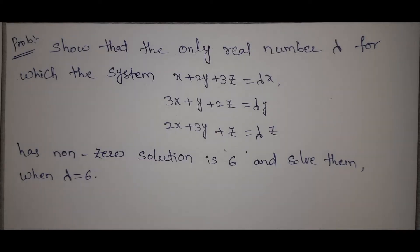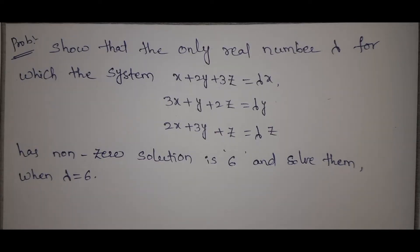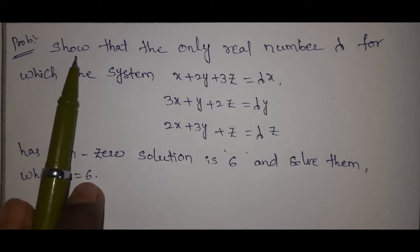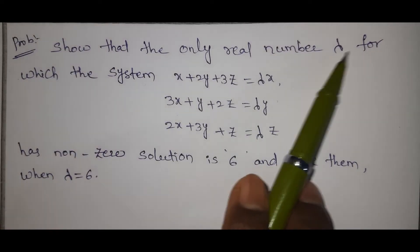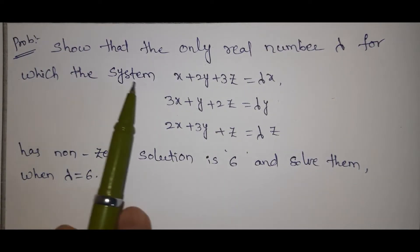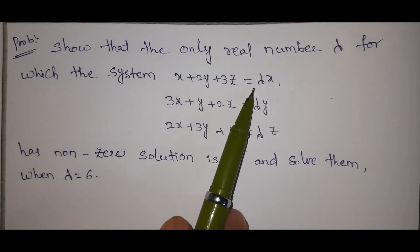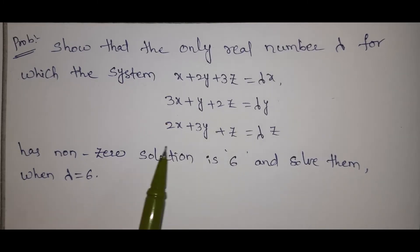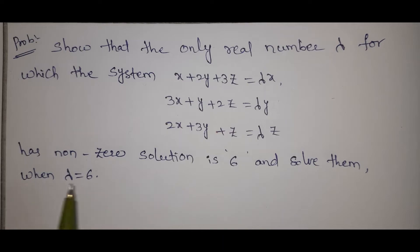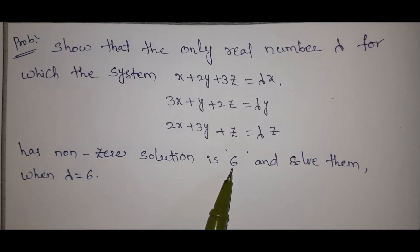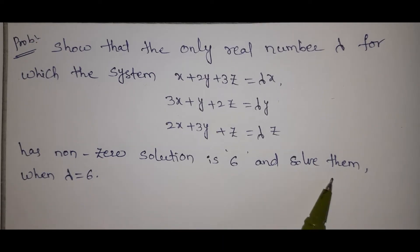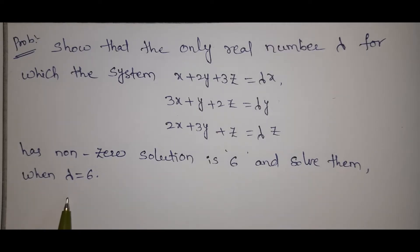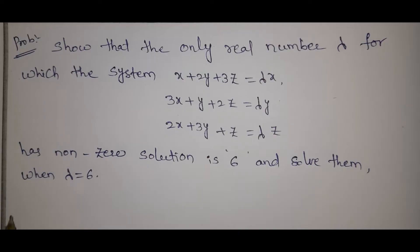Welcome to Raja's Nakalu. Today our topic is a trivial problem — a very important one. Show that the only real number lambda for which the system x+2y+3z=λx, 3x+y+2z=λy, 2x+3y+z=λz has a non-zero solution is 6, and solve the system when lambda equals 6.